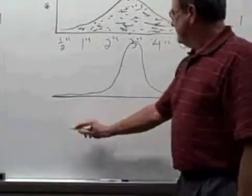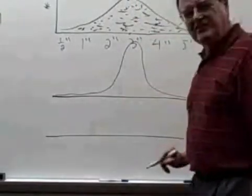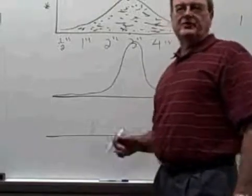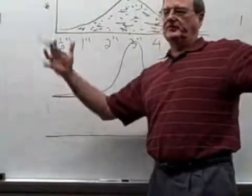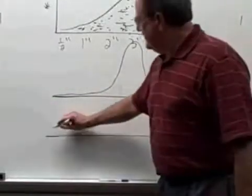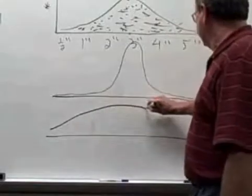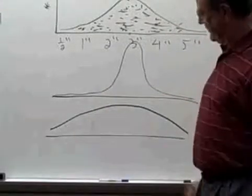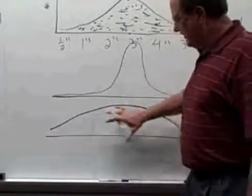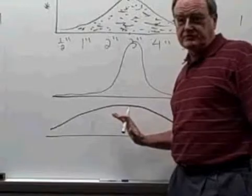The third possibility is that my mower really isn't doing a very good job — it's mowing some at three inches, but some at six inches, some at a quarter of an inch. Then I might see a distribution like this: still most of them right around three, but a significant number at either end. This is still a normal distribution.